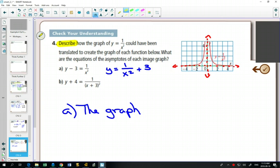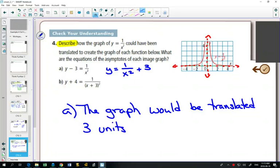So in this one, it says describe how the graph could have been translated to create each new one. The graph would be translated three units and that plus 3 is outside the function. So it would be translated three units up.